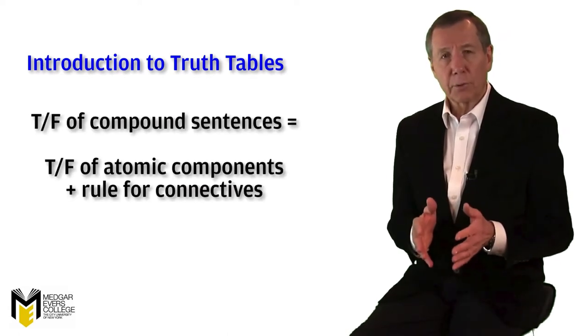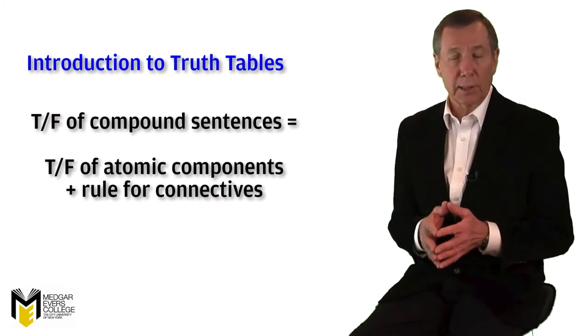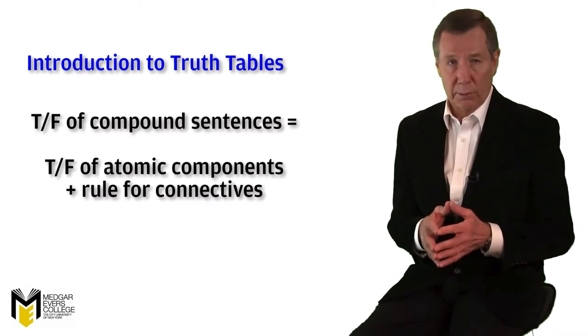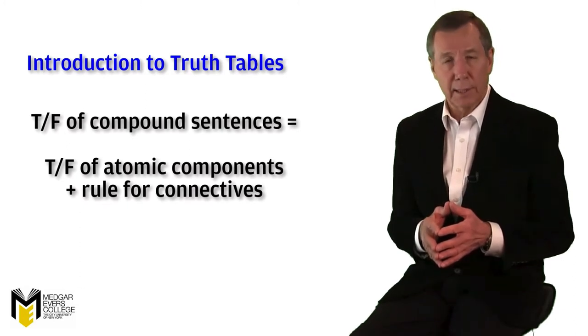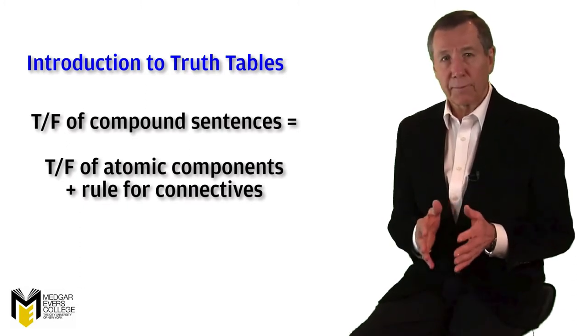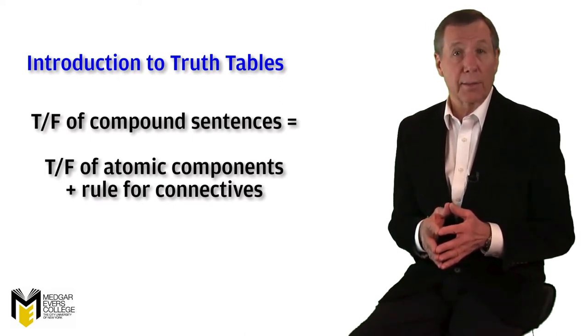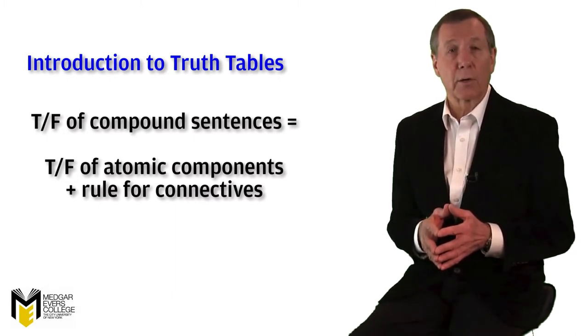As we've seen, the truth or falsity of larger compound sentences in sentential logic is just a function of the truth or falsity of their smaller parts. Any larger sentence of sentential logic is composed of atomic sentences with sentential connectives. The truth value of a compound sentence depends only on the truth value of the atomic sentences that it contains and the rule for the connective or connectives that are used.